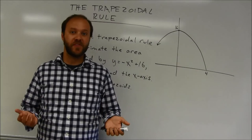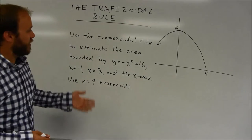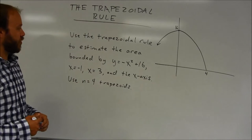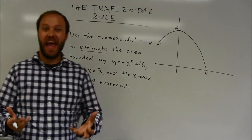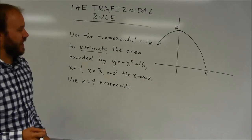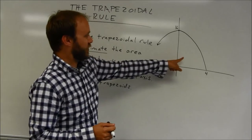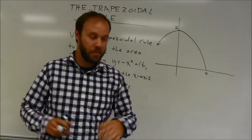Hi, I'm going to go through a basic demonstration of the idea of the trapezoidal rule. You can see my problem here. My problem asks me to use the trapezoidal rule to estimate the area bounded by the curve y equals negative x squared plus 16. You can see the curve here. It is basically an upside down parabola.